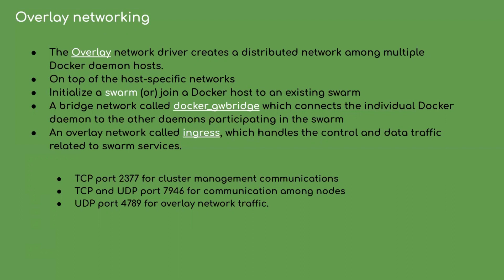The node where you initialize Docker Swarm becomes the manager node; all remaining nodes are worker nodes. Once you initialize Docker Swarm in one node, it internally creates two networks: a bridge network called Docker Gateway Bridge, which connects the individual Docker daemon to other daemons participating in the swarm, and an overlay network called Ingress, which handles the control and data traffic related to swarm services. One thing to remember: if you understand the Docker Swarm concept correctly, then understanding Kubernetes architecture becomes easy.